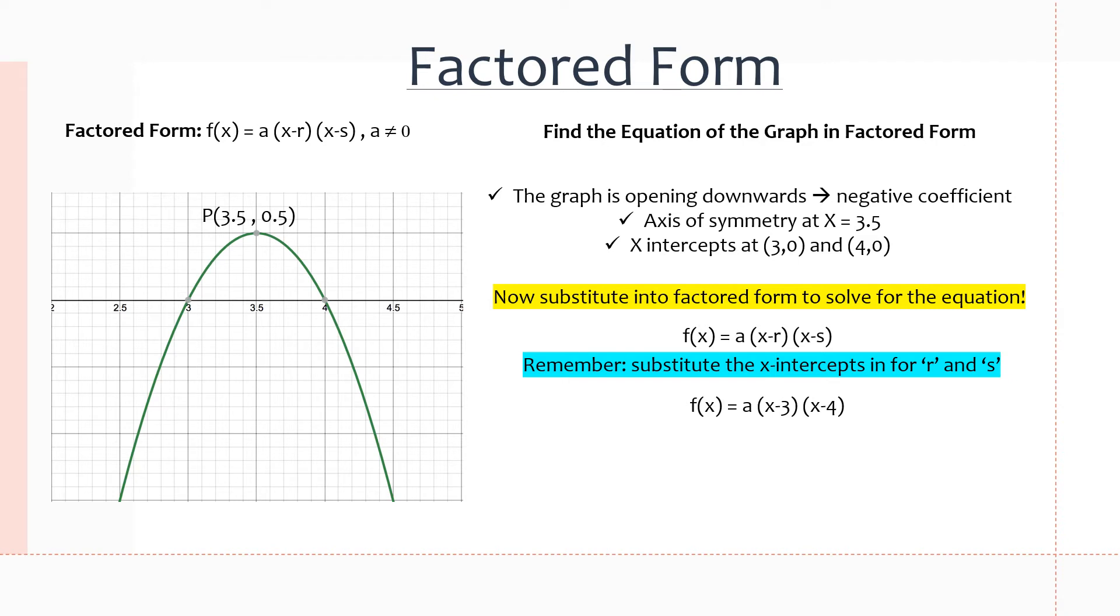We do this over here, so we substitute the x-intercepts 3 and 4 in for r and s, respectively. And then we substitute this other point, (3.5, 0.5) in for x and f(x). So at every x value, we put 3.5, and for f(x), we put in 0.5. And now we're just going to solve for a. So 0.5 equals, so 3.5 minus 3, which is 0.5, and 3.5 minus 4, which is negative 0.5. So we multiply that to get negative 0.25, and then we divide 0.5 by negative 0.25 to get negative 2 equals a. So now that we have our a value, we can substitute that back into the equation to get negative 2(x-3)(x-4). And this is factored form.